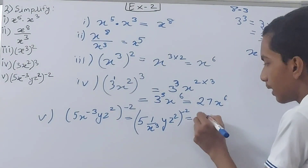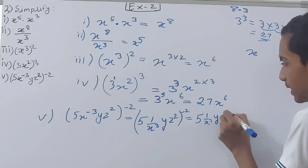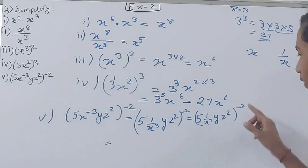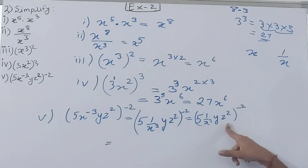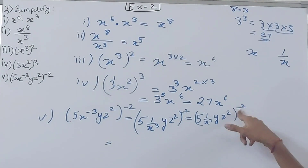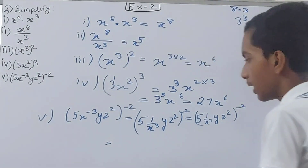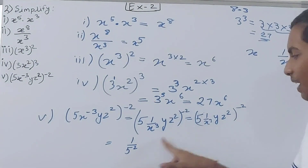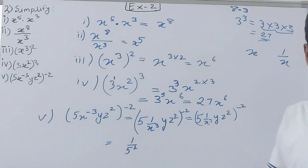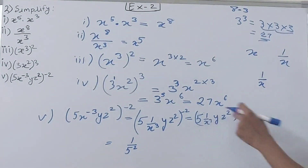So we now have: 5 times (1/x)³ times yz², whole raised to the power minus 2. The next step is to make that minus 2 into plus 2 by reciprocating. For 5 to the power minus 2: the reciprocal of 5 is 1/5, so it becomes 1/5 to the power 2. For (1/x)³, this also has minus 2 as its power, giving (1/x) to the power 3.